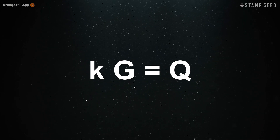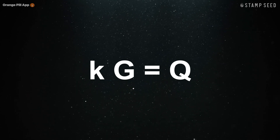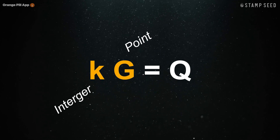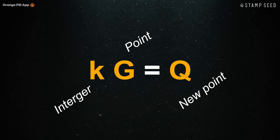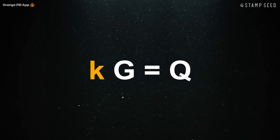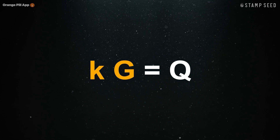Now that you've got a basic premise as to what finite field math is, you can look at the equation k times g equals q, and know that when you make a new Bitcoin wallet, it uses a randomly generated large integer k — your private key — to multiply with g, the generator coordinates, so that it gives you q, your public key, which is another set of coordinates on the elliptic curve. Your private key multiplied by the generator coordinates of Bitcoin's elliptic curve equals your public key.